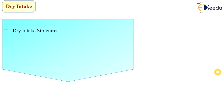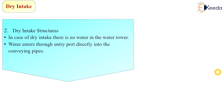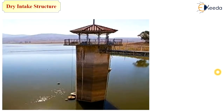Next is the dry intake. In the case of dry intake, there is no water in the water tower. Water enters through an entry port directly into the conveying pipe, and the tower is simply used for the operation of valves. In this structure, the top level or high flood level of water is different from its outlet level of conveying water, so there is a difference between these two water levels — these are called dry intake structures.